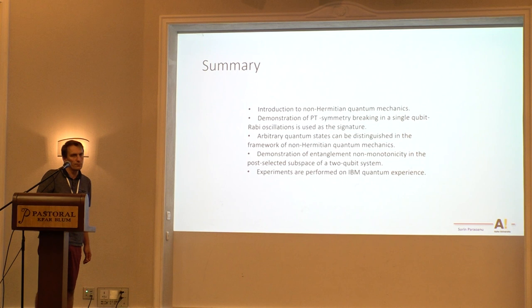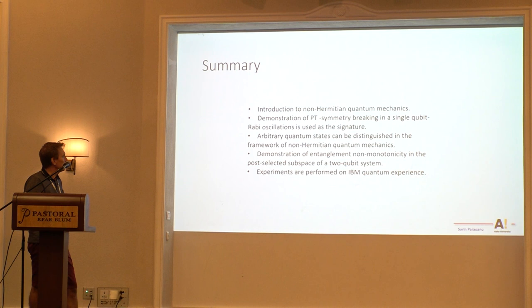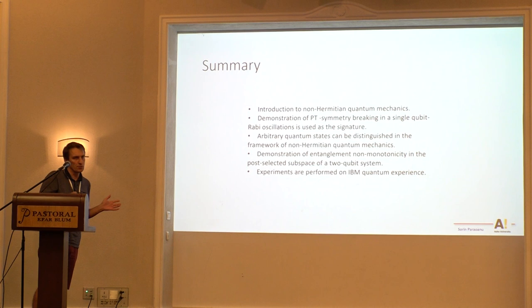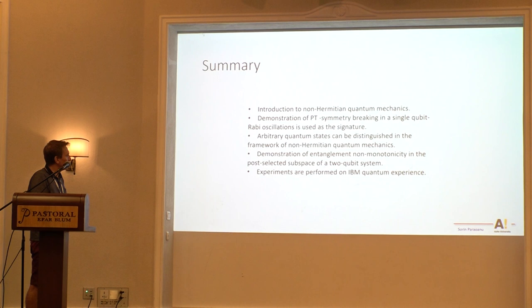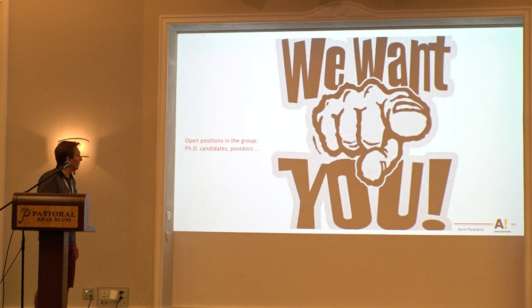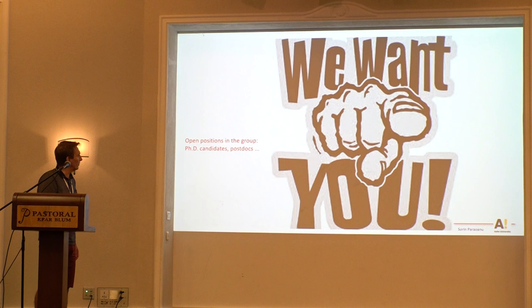In summary, we studied a different type of system related to non-Hermitian Hamiltonians. We see a demonstration of PT symmetry breaking in a single qubit, Rabi oscillations that are used as a signature for this transition. And then we see that in non-Hermitian quantum physics, arbitrary quantum states can be distinguished. We can, for instance, make them orthogonal, which is not possible in standard quantum physics. And we have demonstrated this in several experiments on the IBM, several processors of the IBM quantum experience. That's pretty much it to end up. I would say that if anybody wants to work with us, we have several postdoc positions now open in the group. Please feel free to contact me and I can take questions if there are any.